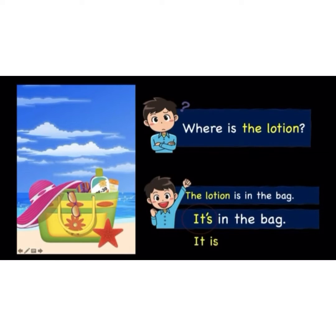The lotion is in the bag. 'It's' — the pronoun for 'the lotion' — we use 'it's'. Instead of saying the long form 'the lotion is in the bag', we cut it short and use 'it's'. It's in the bag. 'It' refers to one object only. If there's one lotion, you can use 'it's'. If there are many, you cannot use 'it's'.